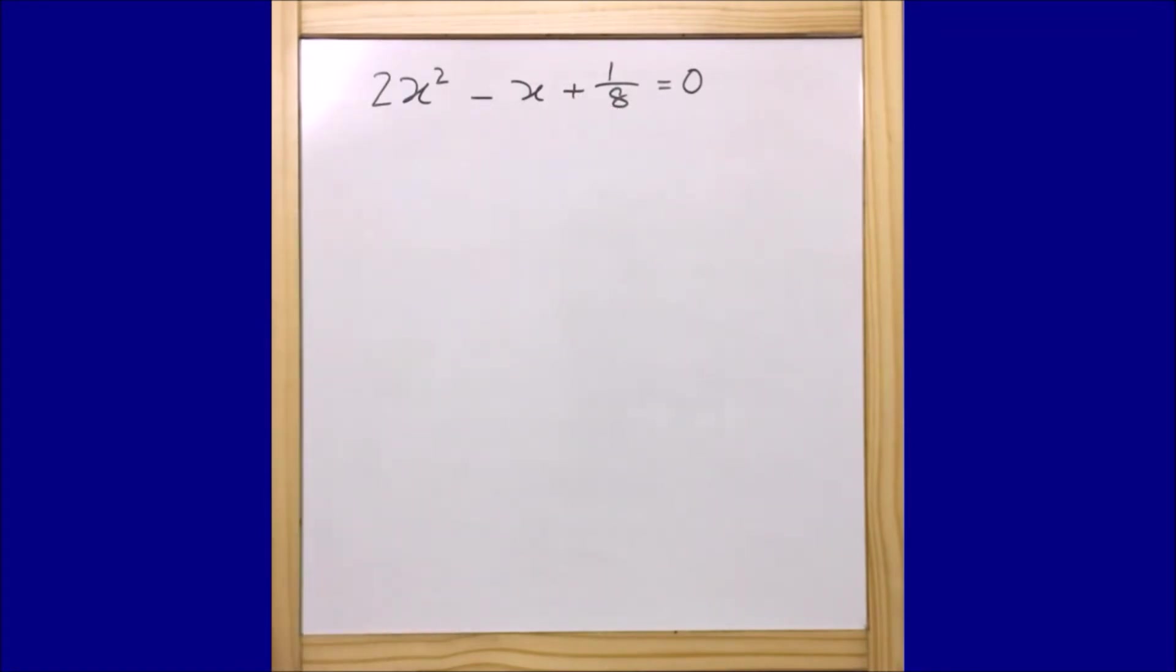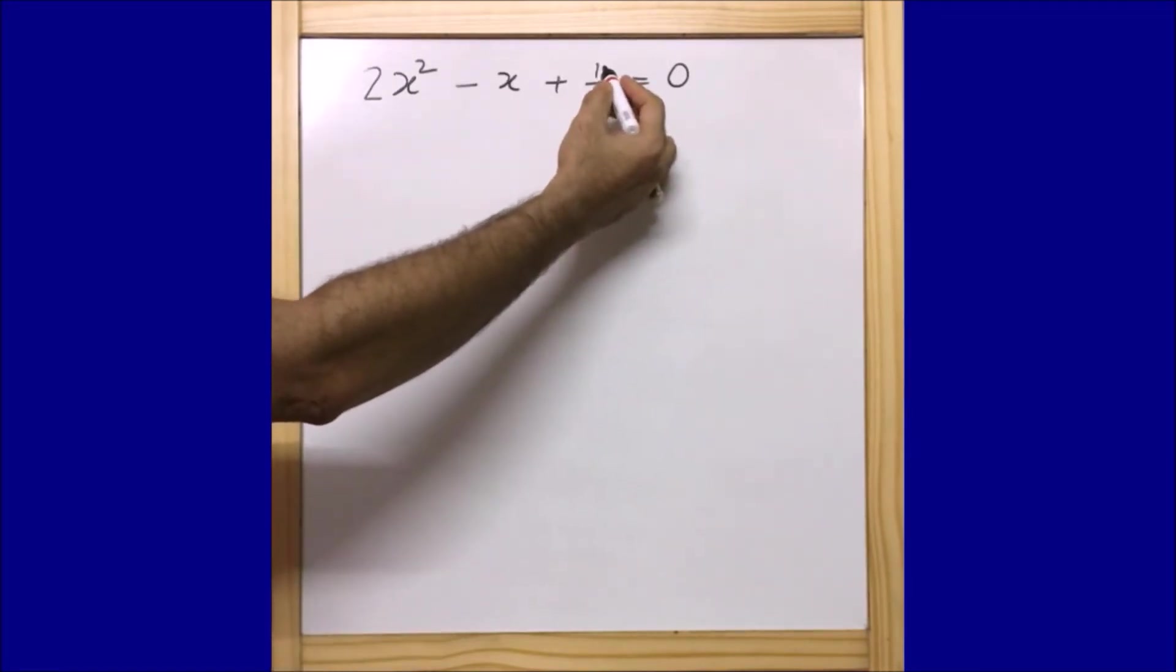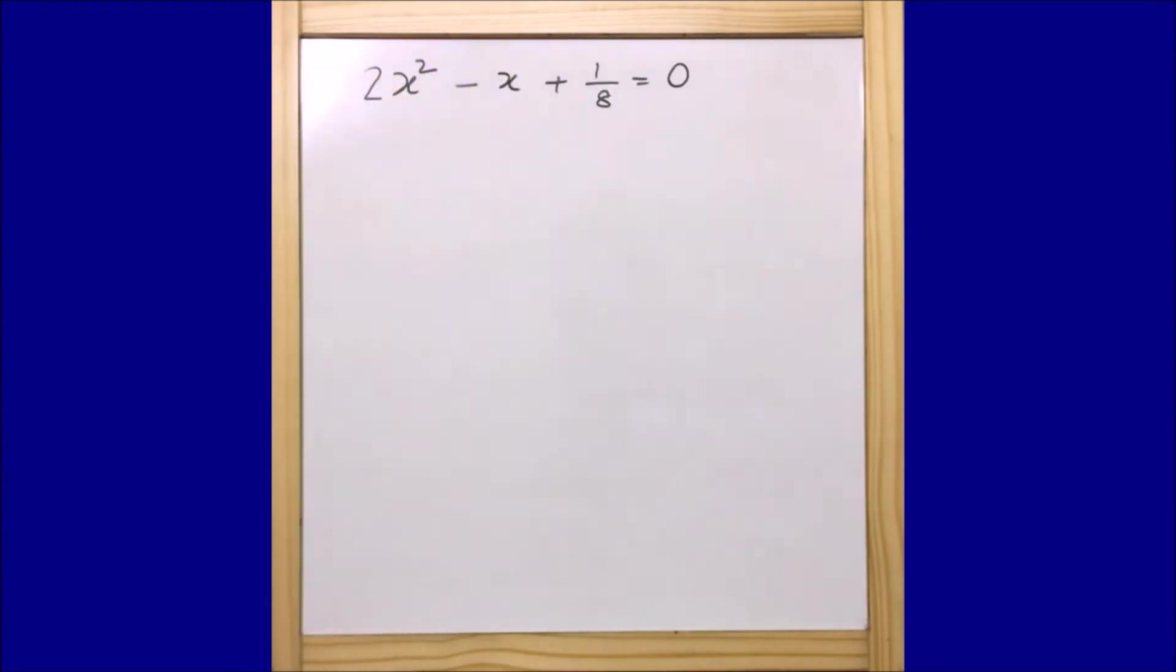We are going to eliminate this 8. So in order to eliminate this 8, I am going to multiply by 8. If I multiply 8 by 8 it will become 1. So that is what we are going to do.